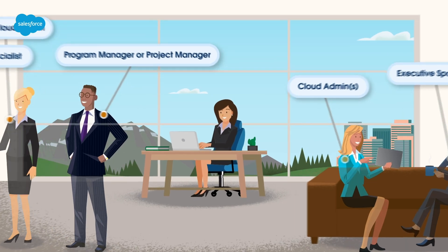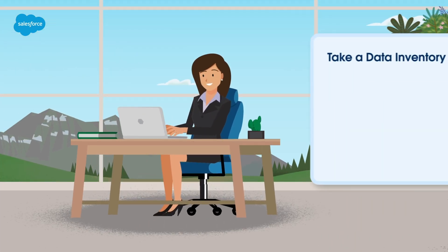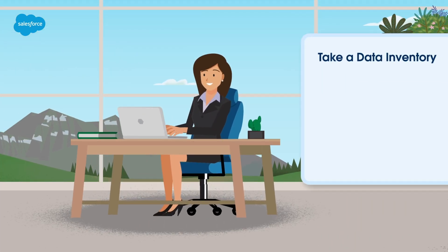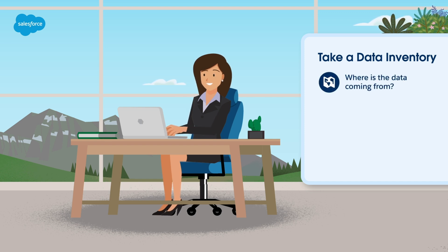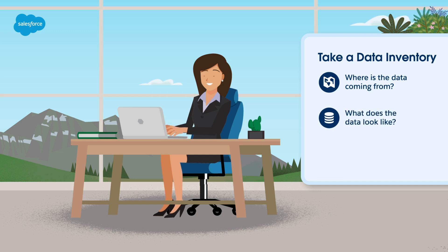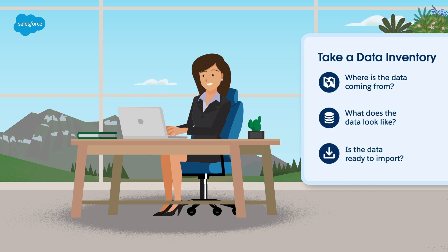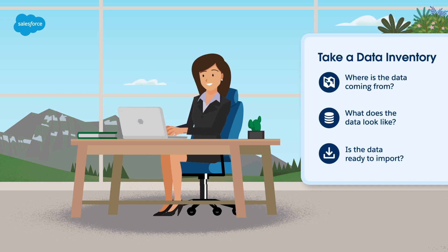Once you've assembled your team, the next step is to take a data inventory and create an offline data dictionary of each source system. Ask yourself: Where is the data coming from? What does the data look like? Is the data ready to import? To help you get started, check out the data discovery worksheet included in the session overview. This template can be used as the base for your data dictionary.